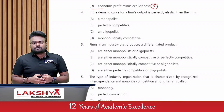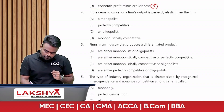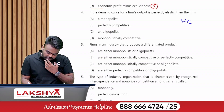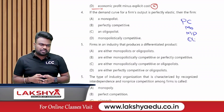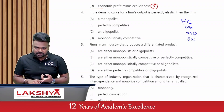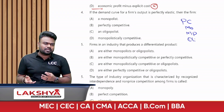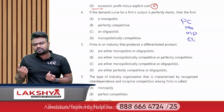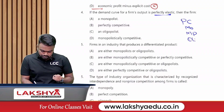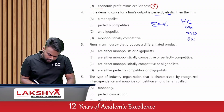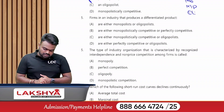Fourth question: if the demand curve for a firm's output is perfectly elastic, then the firm is in which market? In Chapter Markets, there are four types: perfect competition, monopoly, monopolistic, and oligopoly. In perfect competition, elasticity equals infinity. Since the question asks about perfectly elastic demand, the correct answer is the PC market — option B.